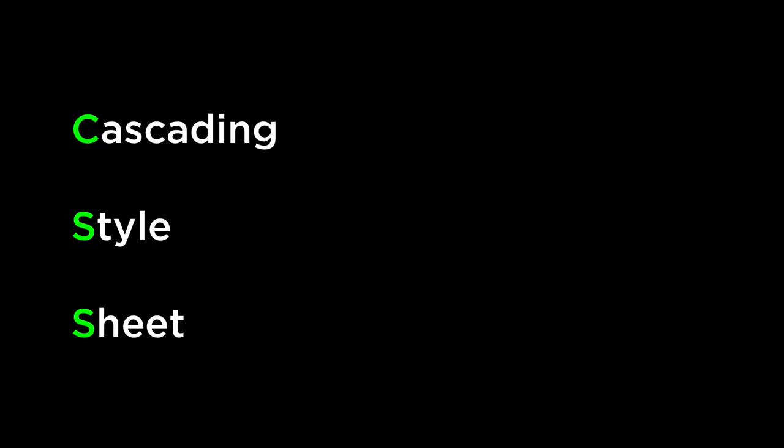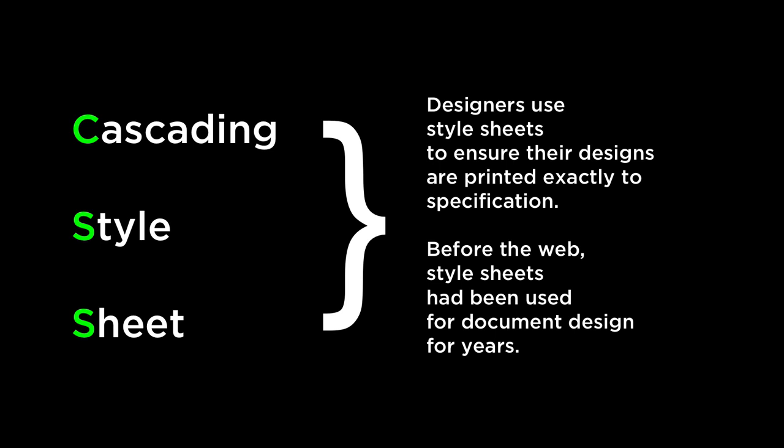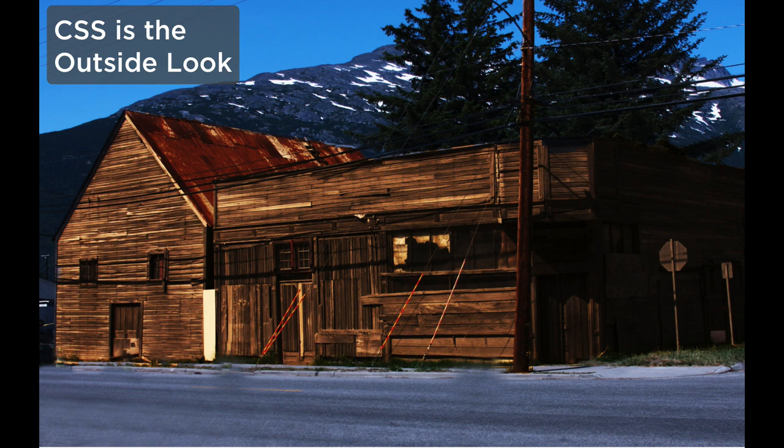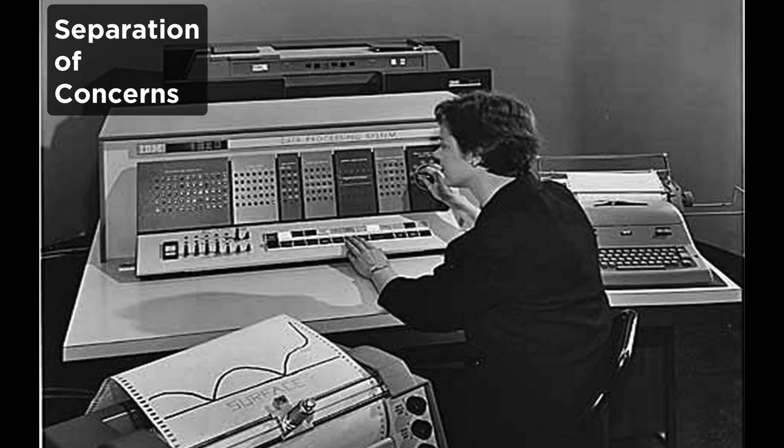What is CSS? CSS stands for Cascading Style Sheet. CSS is a simple method for adding style, font, color, spacing, etc. to HTML documents. CSS allows you to describe how the document is represented on the screen and or when it is printed. If you think of HTML as describing the structure of the document, you can think of CSS as describing the look of the document. In computer science, this is referred to as separation of concerns.